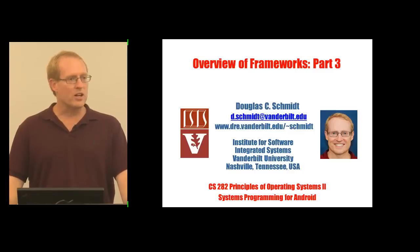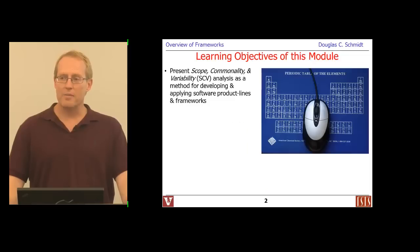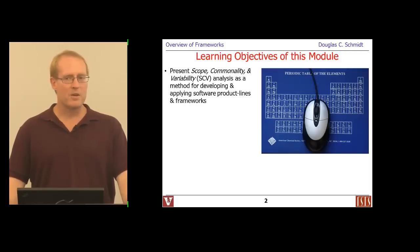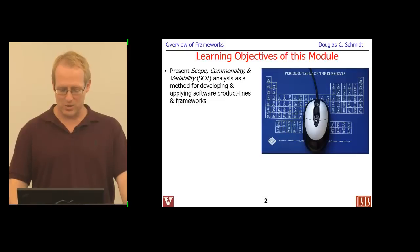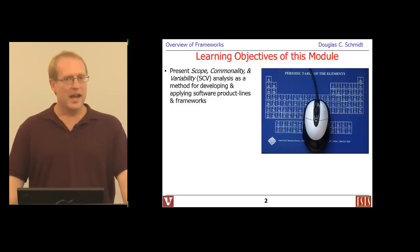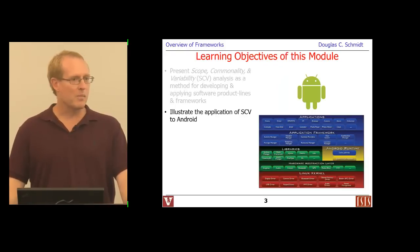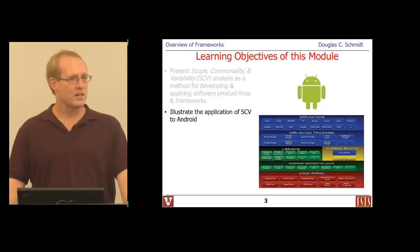We're going to start by talking about something called scope commonality and variability analysis, which is a method for developing frameworks and other kinds of systematically reusable artifacts. You'll get a chance to learn about SCV, and then after we talk a bit about SCV as a method, we'll talk about how you might apply SCV to understand some of the elements that go into the Android architecture.